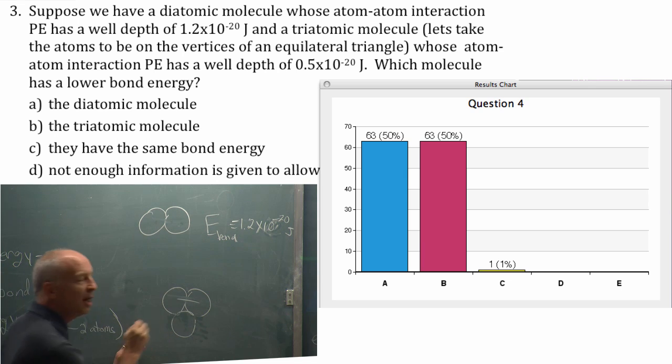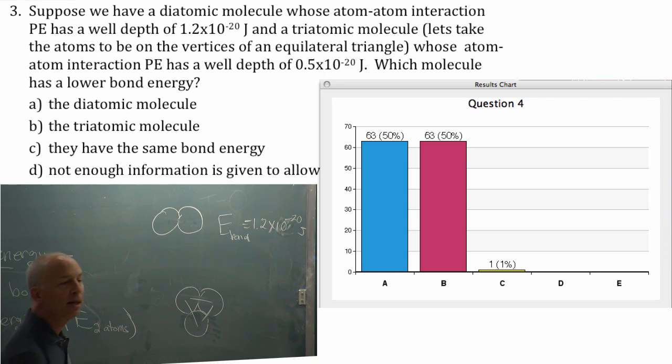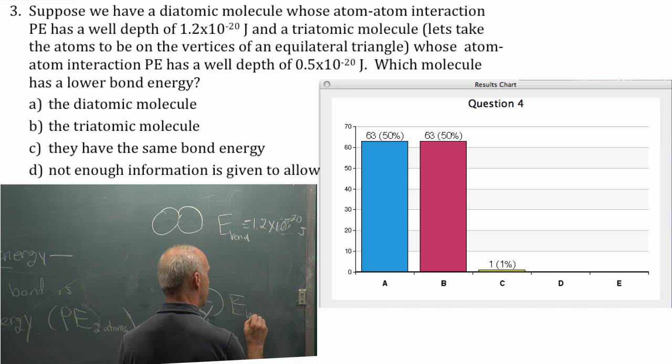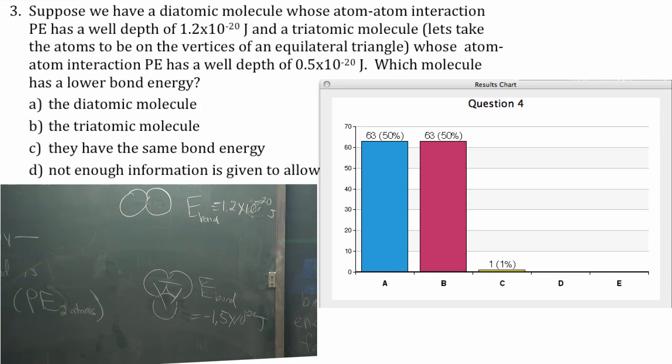There's a bond. There's a bond. Negative 0.5. There's another one. Negative 1. There's another one. Negative 1.5. The bond energy for that triatomic molecule. Negative 1.5 times 10 to the minus 20th joules.